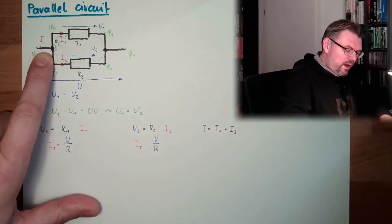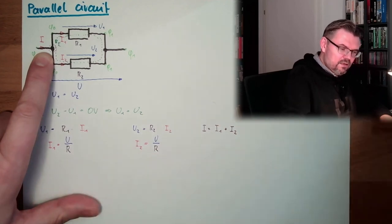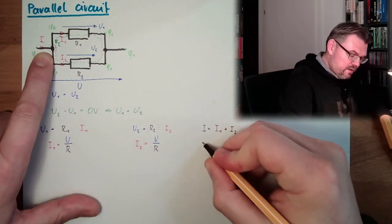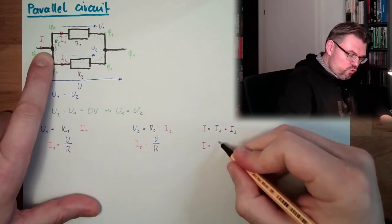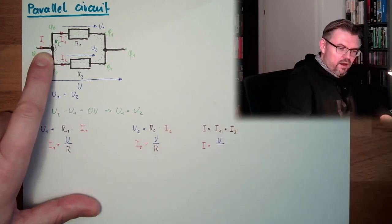Alright, now I put those things in, so I can say I equals U divided by R1 plus U divided by R2.